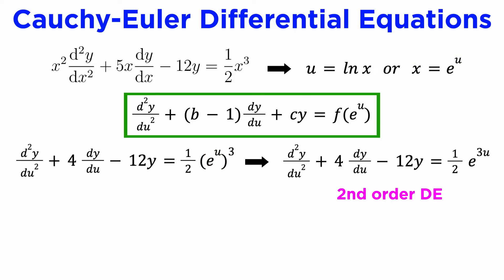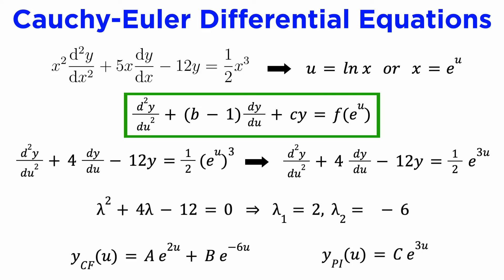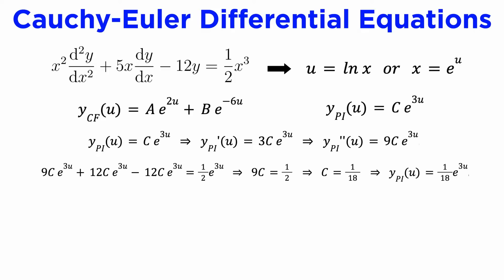This is a second-order DE with constant coefficients, so we write down the characteristic equation and solve it to find two distinct real roots: lambda equals 2 and lambda equals negative 6. So our complementary solution as a function of u is this exponential form. Now we just need the particular integral, which we can get from the method of undetermined coefficients, using y equals c e to the 3u as the trial function. Differentiating and substituting into the DE, we find c equals 1 over 18, so the particular integral is (1/18) e to the 3u. The general solution is then y(u) equals a e to the 2u plus b e to the negative 6u plus (1/18) e to the 3u.